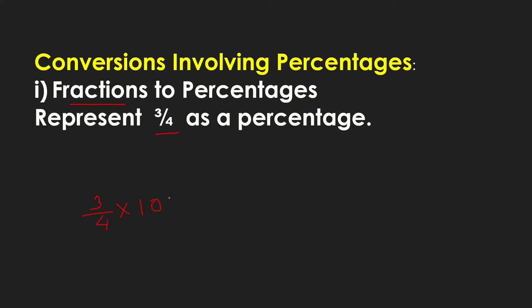You just multiply by 100. 4 times 25 is 100, 25 times 3 is 75. So that is 75 percent. That's how you represent a fraction as a percentage.